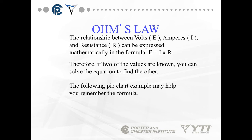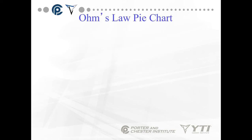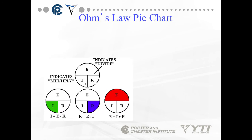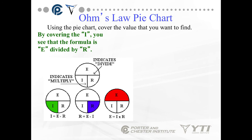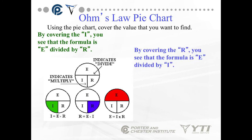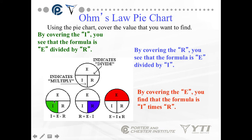Use the pie chart — cover the value you want to find. If you cover the I, you see the formula down in the left corner: E divided by R. So for amperage, it's voltage divided by resistance.